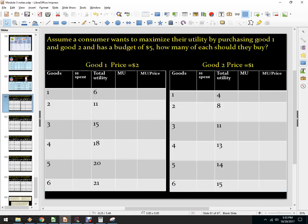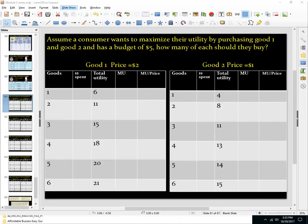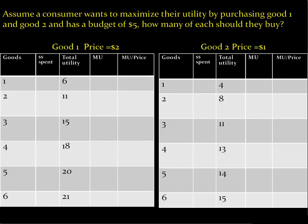The kind of problem I'll put on tests will be a little easier — I don't feel like you need a calculator always for this. So I'm going to do two of these and leave the rest in the notes. In this case the consumer has $5. Good one costs $2. Good two costs $1. Here's the total utility and total amount spent — so this is the money they would have spent on each good.